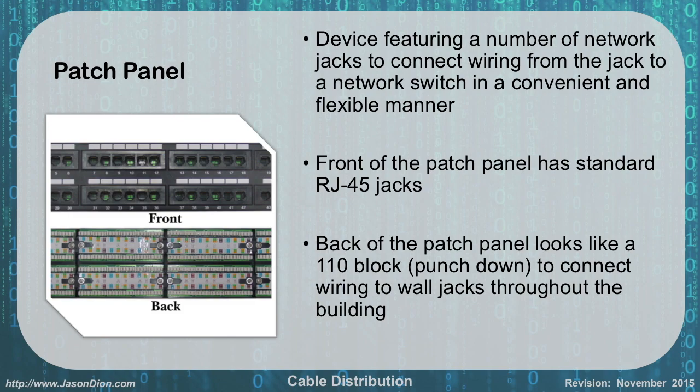Patch panels are also found in the IDFs and MDFs. They allow numbers of network jacks to connect wiring from the jack in the wall to the network switch in a convenient and flexible manner. The front has RJ45 jacks that can be patched into a switch plate, and the back has punch-downs similar to the 66 and 110 blocks. This gives us a very flexible way of being able to rewire buildings without having to change the wires going to each room — we can simply use the front patch panel to change the wiring and patch through the circuits.